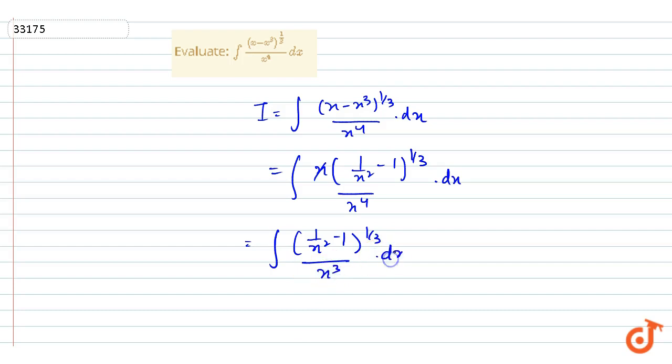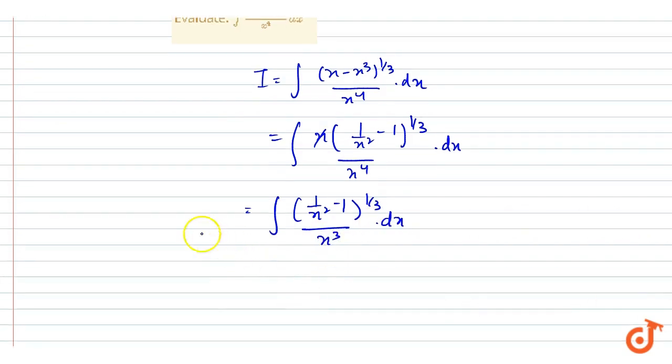Now putting, if we put x² equals to t, then we will get 1/x³ dx equals to -dt/2, so replacing we will get it as -1/2 integration of t^(1/3) dt.